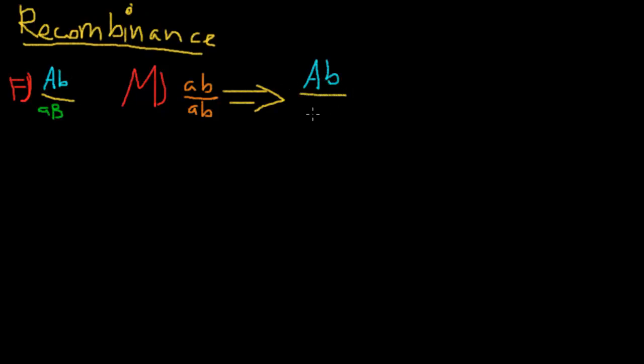So we're expecting big A little B, little A little B, or little A big B. Let me write that down. Little A little B, right? This makes sense that we get little A little B no matter what from the mother. And then from the father, we get either big A little B, or we get little A big B. So I'm going to box this.